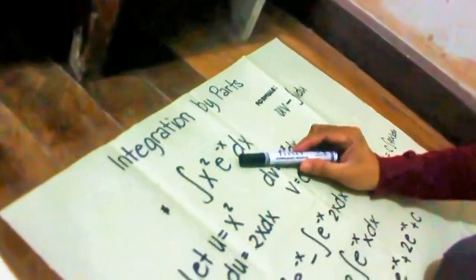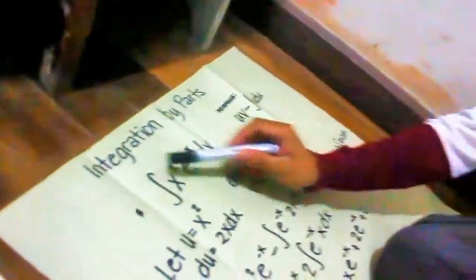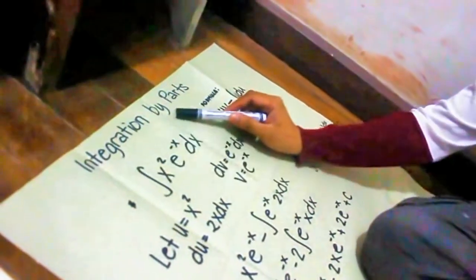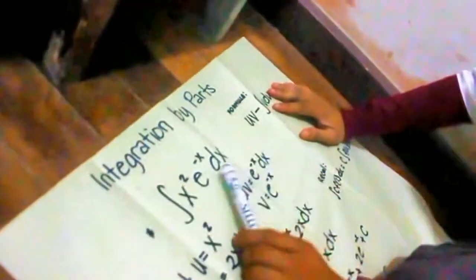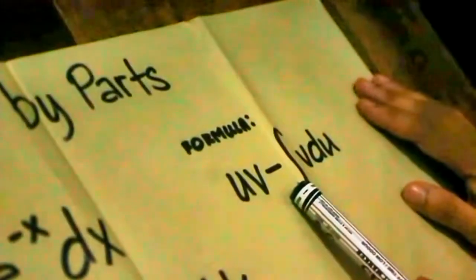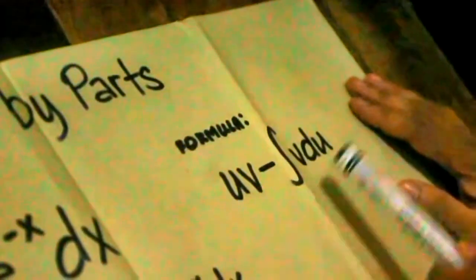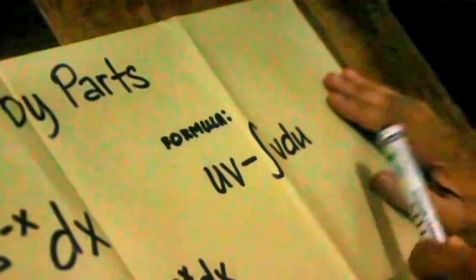Hello guys, this is Michael and I'm going to show you how to solve an integration problem using integration by parts. For this example, we're going to find the integral of this expression using integration by parts. We have the formula: u v minus the integral of v du.